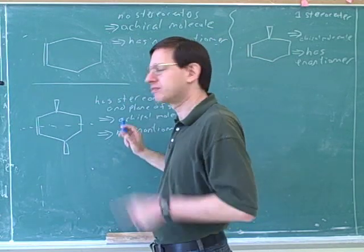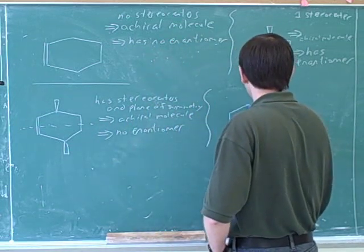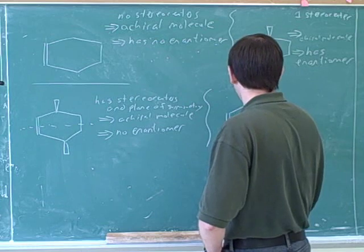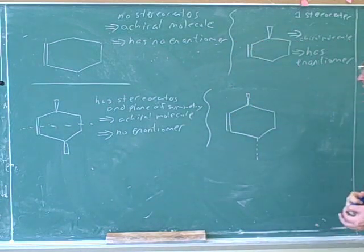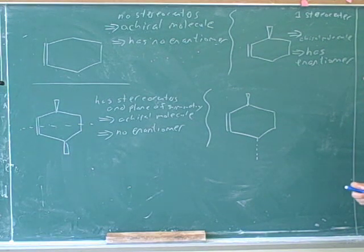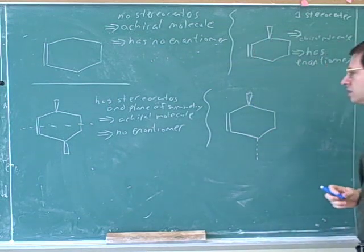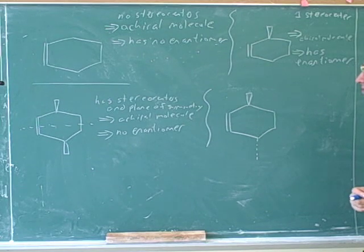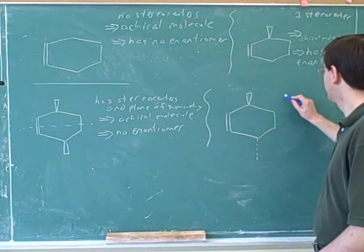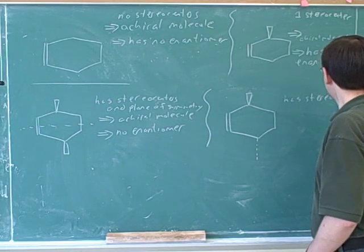But if there are multiple stereocenters, you have to check for the plane of symmetry as well. And if you find one, there's no enantiomer. Does this molecule have stereocenters? Yes. Does it have a plane of symmetry? No.